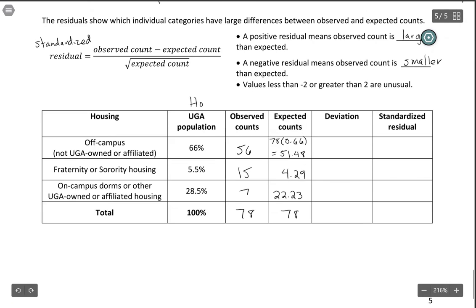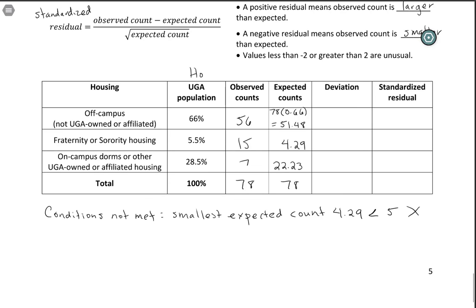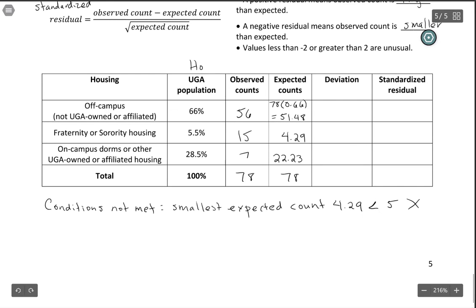Thinking about the conditions, they are not technically met here — our smallest expected count, 4.29, is less than 5. It's not about the observed counts being big enough; it's the expected count that matters. I'm not super worried because the p-value was incredibly small, so even if it's a little off it won't change our conclusion, but we would want to be careful. There were definitely more than 78 people in the room that day, but we'll let that class off the hook.